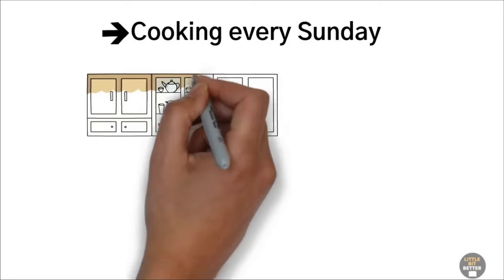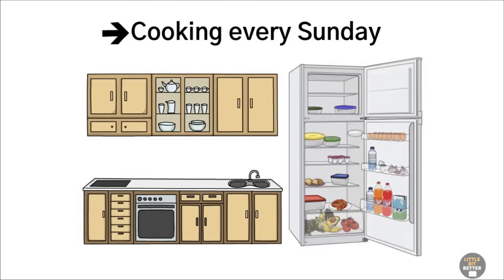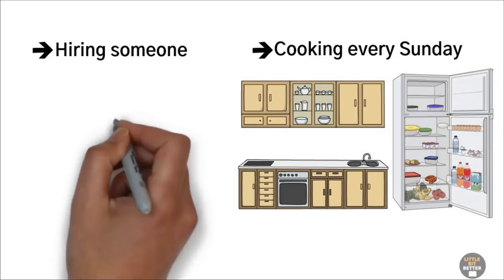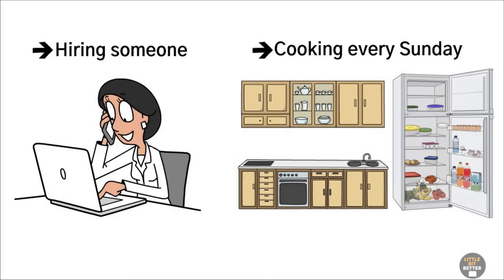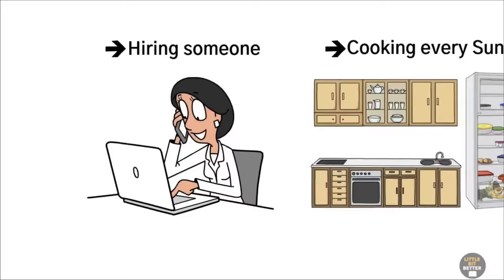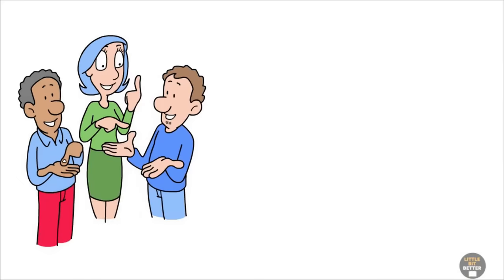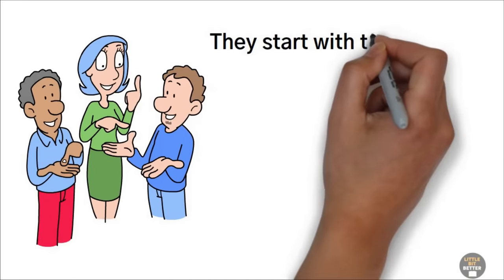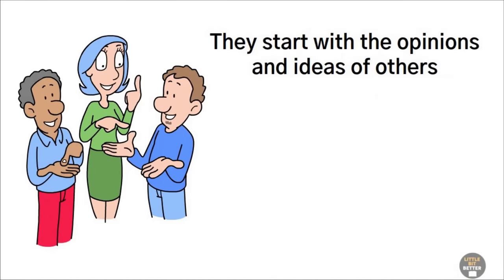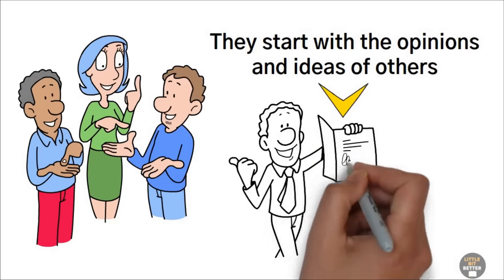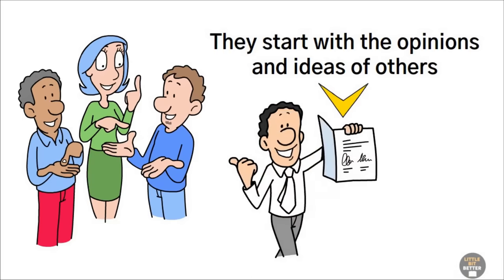Here are a few simple examples. Cooking every Sunday for the whole week so that you don't have to cook, clean, and shop every day. Hiring someone to take care of all small administrative tasks instead of you doing them. Here's another thing about effective people and their decision-making process. They don't start with facts. They start with the opinions and ideas of others. Why? Because they know that the right decision grows out of disagreement, out of the clash of different opinions.